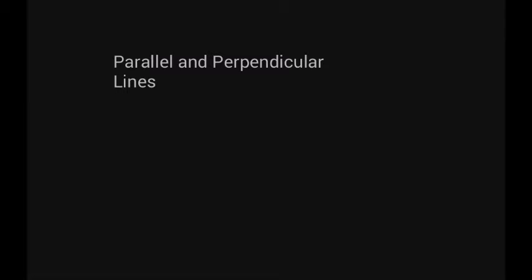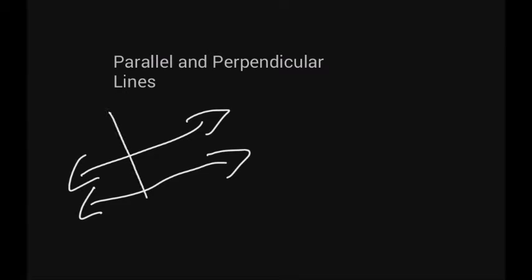We're going to talk about parallel and perpendicular lines. If we have two lines cut by a transversal, we'll call those lines A and B, and the third line we'll call C. If C is perpendicular to A and perpendicular to B, then we know that line A and B are parallel.